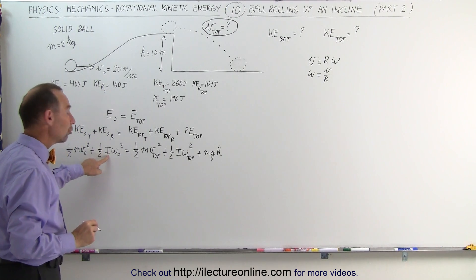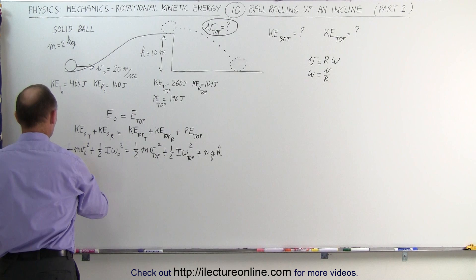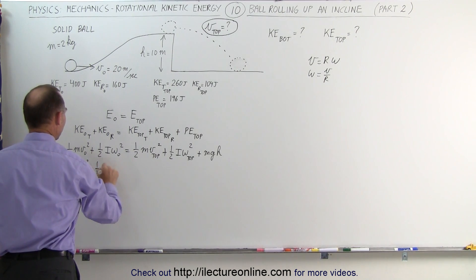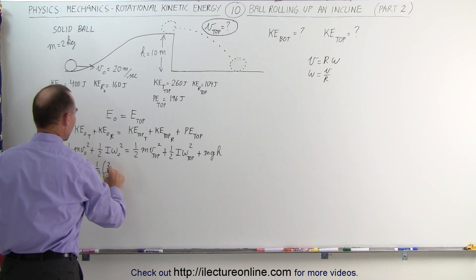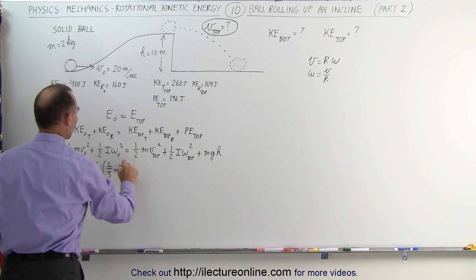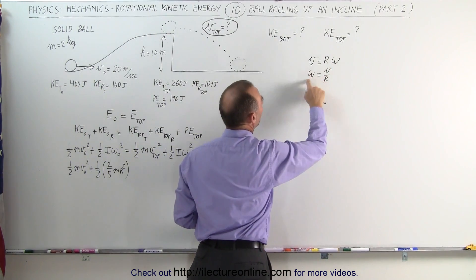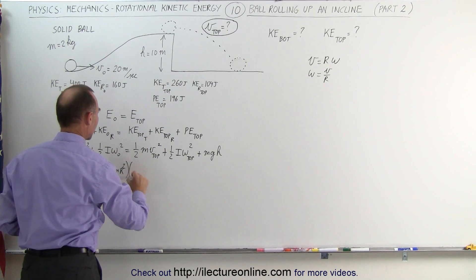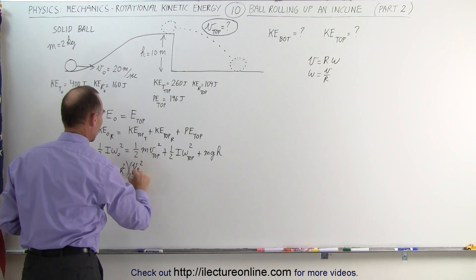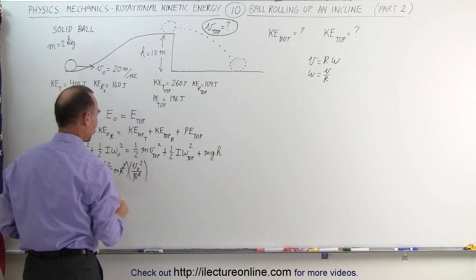Now we're going to substitute for I and omega what those are equal to, since it's a solid ball. We get one-half mv-initial squared plus one-half times the moment of inertia of a solid ball, which is two-fifths mr squared. And remembering the relationship between v and omega — omega equals v over r — omega-initial squared becomes v-initial squared over r squared. Right away you can see that the r squared cancel out.